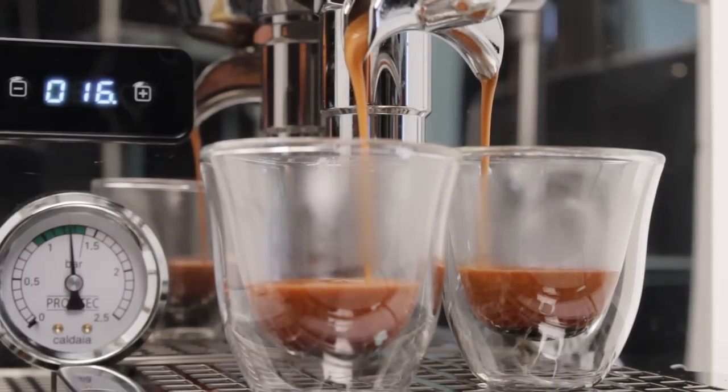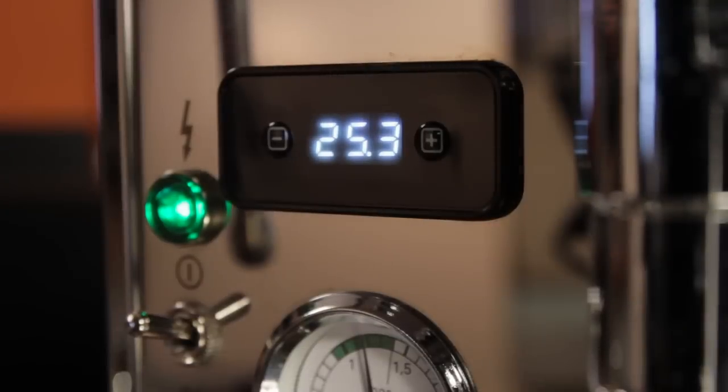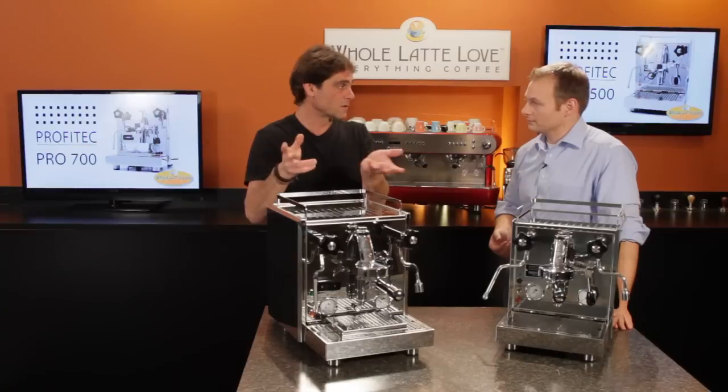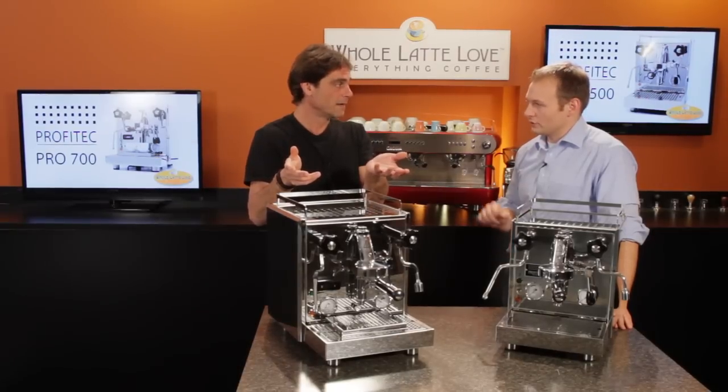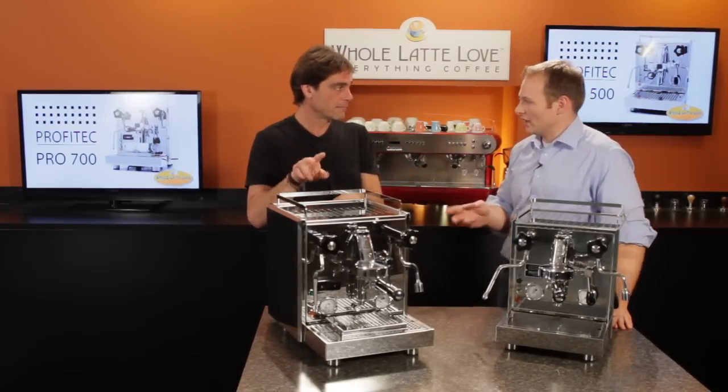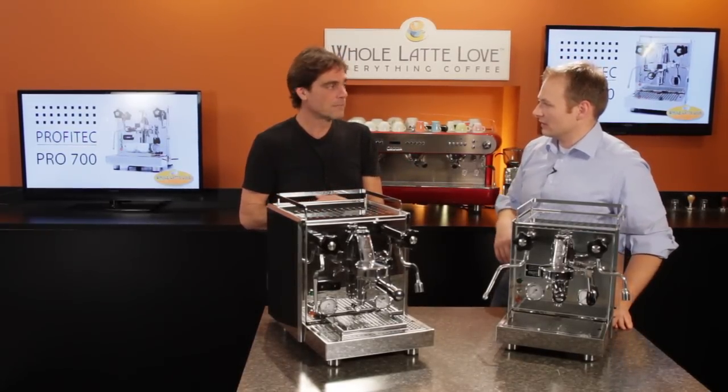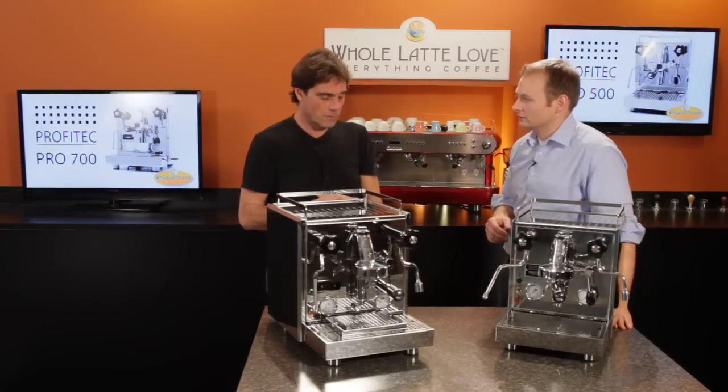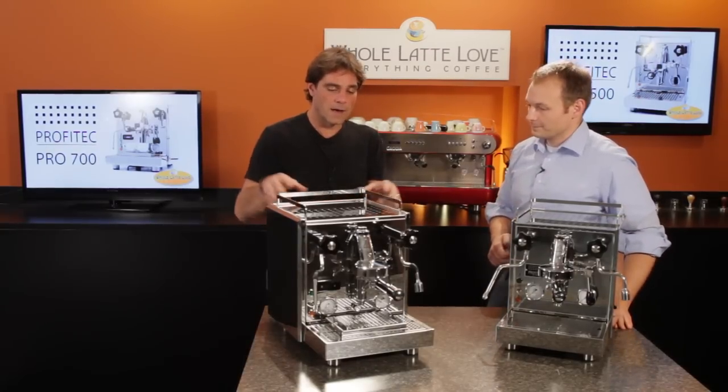And then when the machine's just idle, it's going to alternate between showing you the temperature of the brew boiler and the temperature of the steam boiler, which is very nice. And from that same display, you can set those to whatever you want. Quite easy. Push both buttons and then you go into the menu, the T1 and T2, you can change.